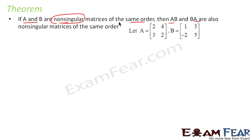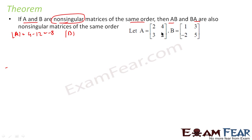For example, take two matrices A = [2, 4; 3, 2] and B = [1, 3; -2, 5]. They are non-singular because the determinant of A is 2×2 minus 4×3 = 4 minus 12 = -8, and the determinant of B is 1×5 minus (-2)×3 = 5 + 6 = 11. Both are non-zero, so both matrices are non-singular.